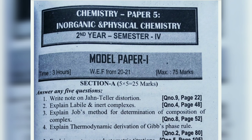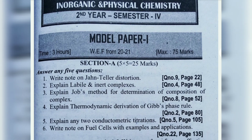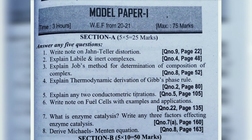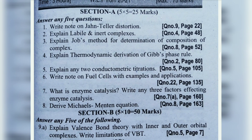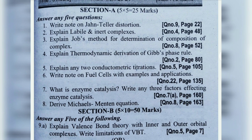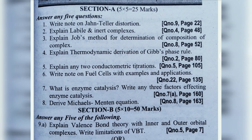Coming to Section — write a note on Jahn-Teller distortion. Explain labile and inert complexes. Explain Job's method for determination of composition of complex. Explain thermodynamic derivation of Gibbs phase rule. Explain any two conductometric titrations. Write a note on fuel cells with examples and applications. What is enzyme catalysis? Write any three factors affecting enzyme catalysis. Derive Michaelis-Menten equation.